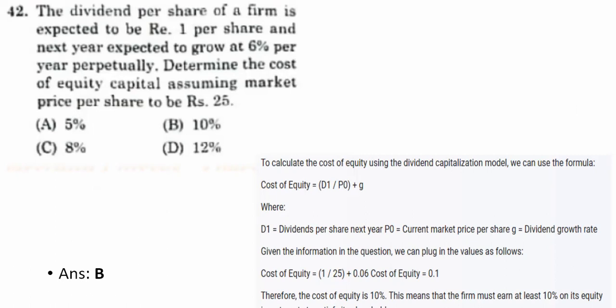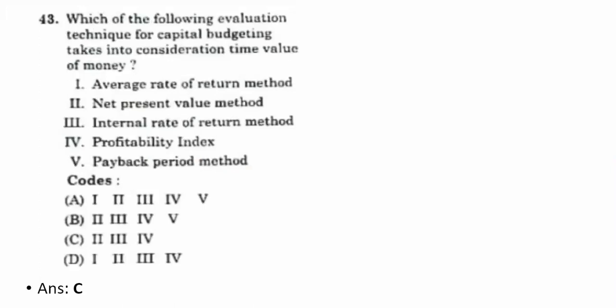Forty-second question: a firm's dividend per share is expected to be ₹1 next year and grow at 6% per year. Determine cost of equity assuming market price per share is ₹25. Using the dividend capitalization model: cost of equity = D1/P0 + g = 1/25 + 0.06 = 0.10, which is 10%. The correct answer is B — 10%.